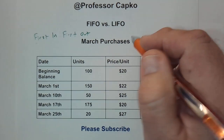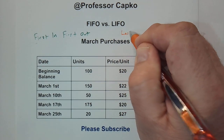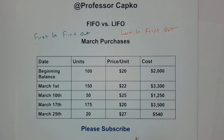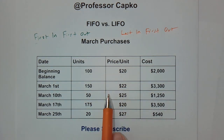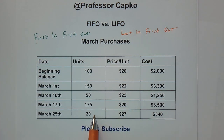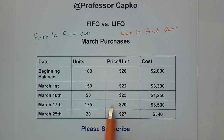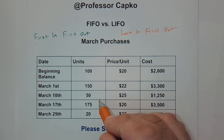Now let's talk about LIFO. LIFO is last in, first out. In this example we're going to be selling items in reverse. The first units we'd sell would come from the most recent group at the highest price, and the next sale once those are gone would come from the next group up at that price, working our way up in that direction.